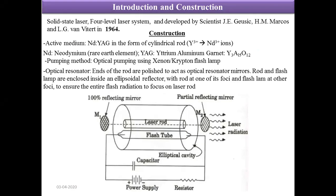This is a solid state laser and is a four-level system. Ruby laser is a three-level system. This laser was developed by Geusic, Marcos, and Wittke in 1964.